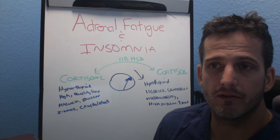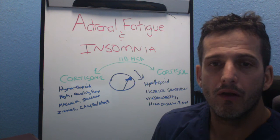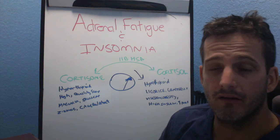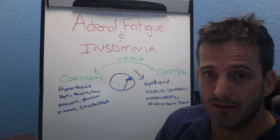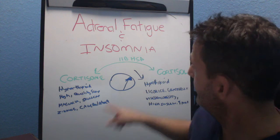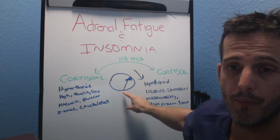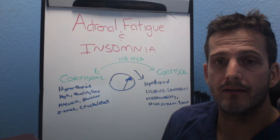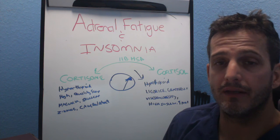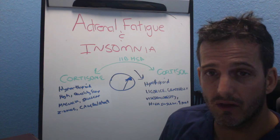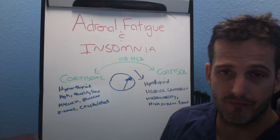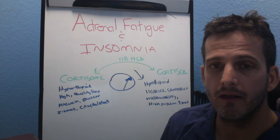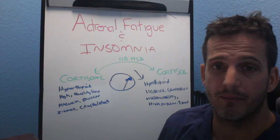What I'll do is run a Dutch test on someone, which looks at their 11-beta-HSD activity — that's just one of the things the Dutch test does. I can see if they're upregulated or not. If they are, we can do things beyond just addressing the stress response — figuring out is there an infection, is there inflammation, is there an injury, are there psychosocial stressors.